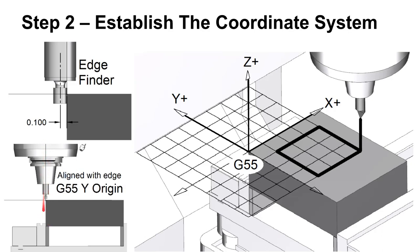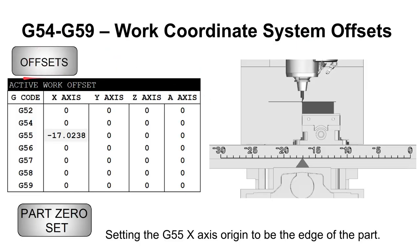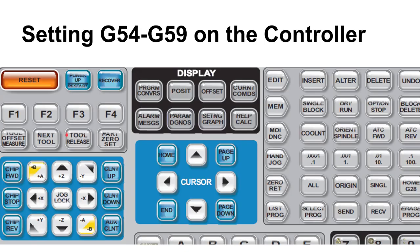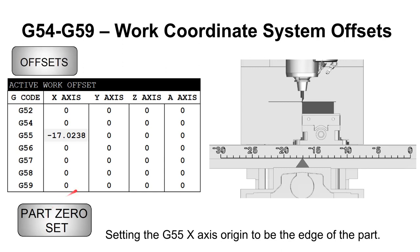It's our job to jog over that 0.1 inches to align with what will become the Y-axis origin. This edge of the part becomes Y equals zero. We position the tool there, then go to our controller, hit the offset button, get to the active work offset screen, highlight the X-axis on G55, and press Part Zero Set.